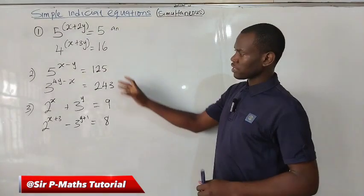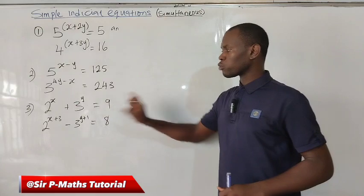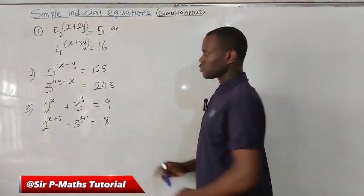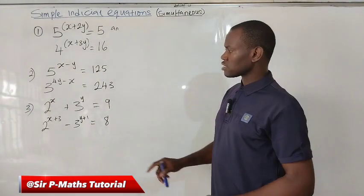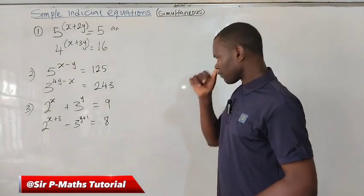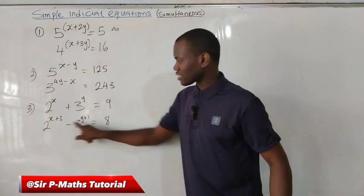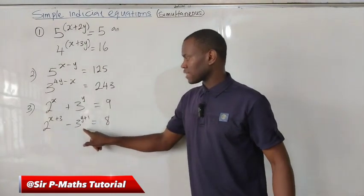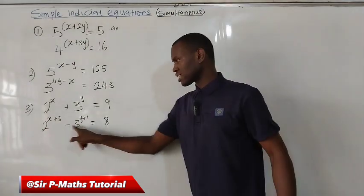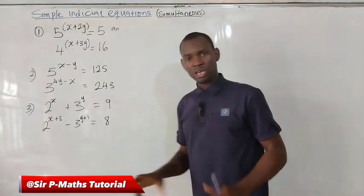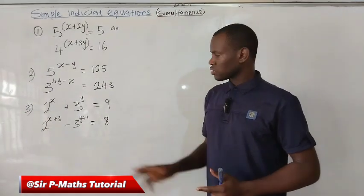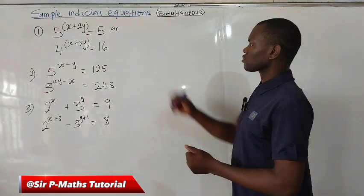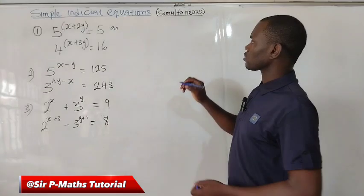Pay attention here, here, and here most especially — students miss it a lot with equations like this. You observe that the bases here are not equal; they are not the same, and there is nothing you can do to get three and two to become equal bases. I will teach you how to solve cases like this. So let's start with the first one.